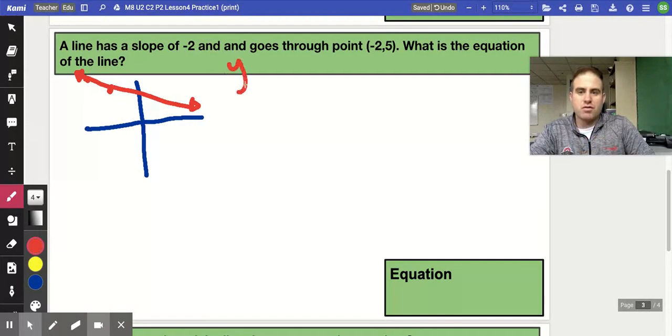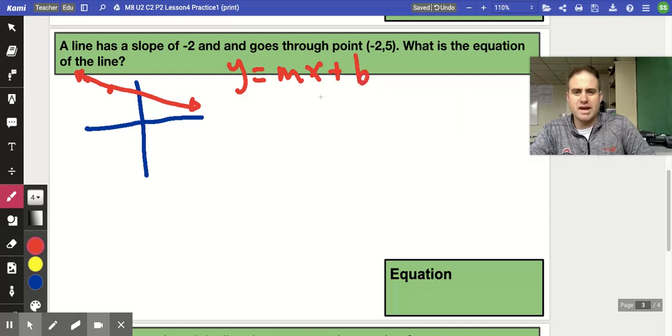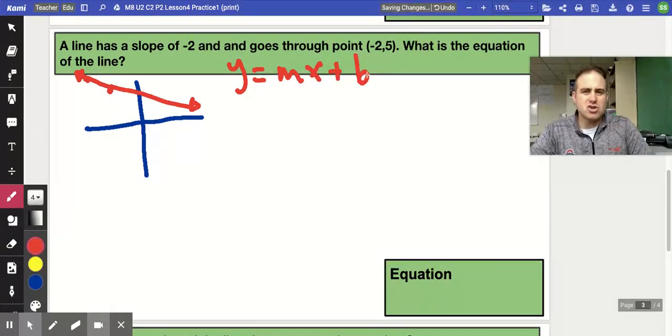All lines have the format y equals mx plus b. So I already know my slope is negative 2. So now I just have to figure out what is this b value.